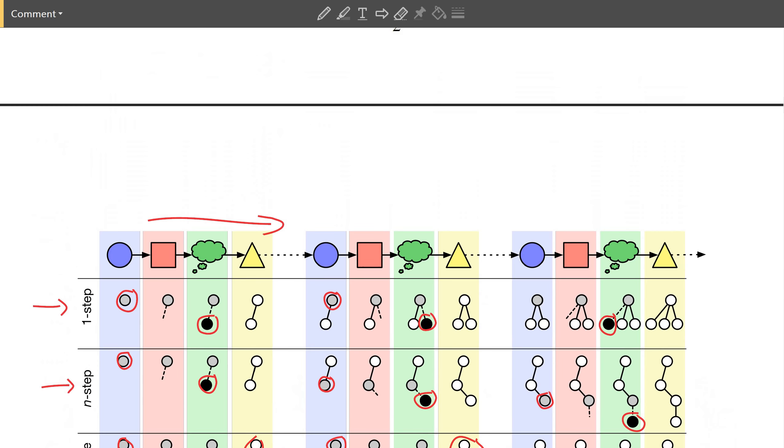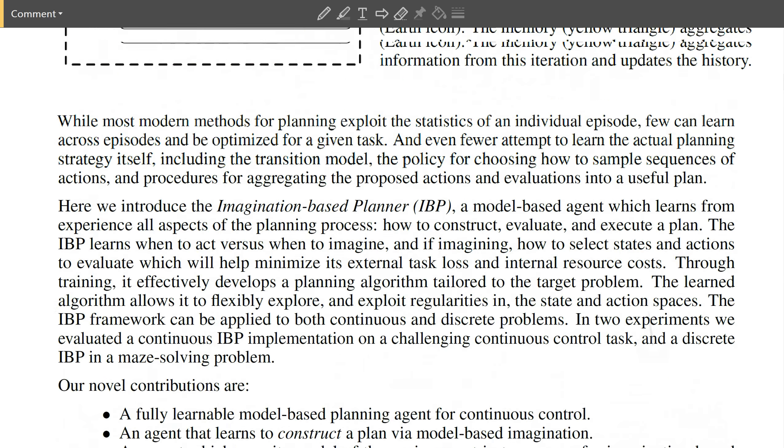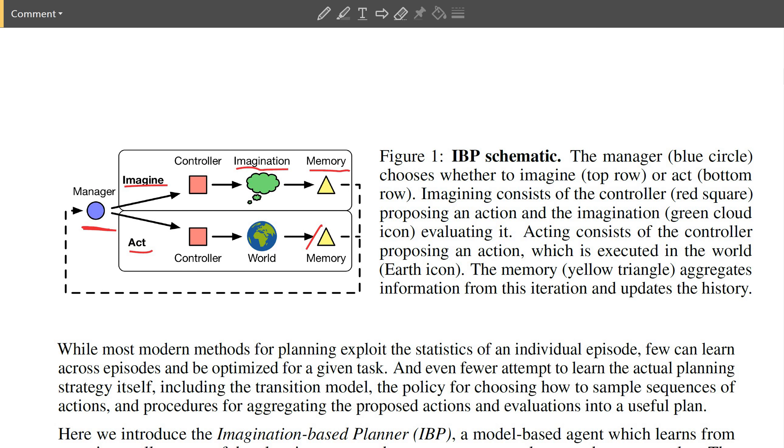So if you then decide to do an action in the real world, what you can do is you can take all of the things you've imagined and use that. So you see in this pathway here, this flows back to the manager. At some point, it decides, okay, I've imagined enough and we can then use all of these imagined steps in order to take a real world step. And after the real world step, the entire thing starts again.